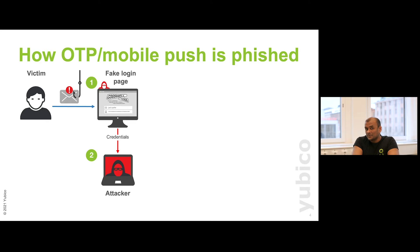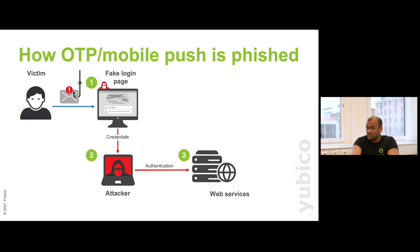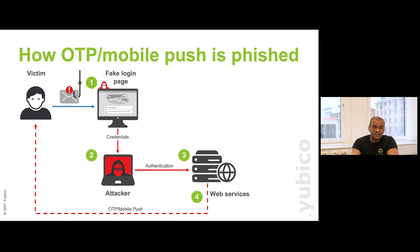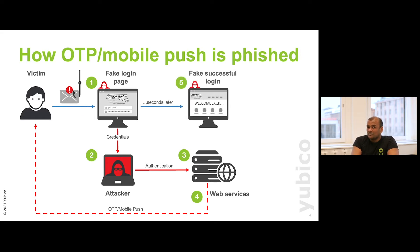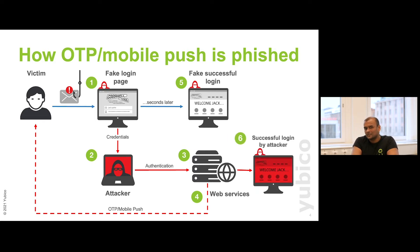As soon as you start putting in your username and password, the attacker intercepts it and simultaneously starts a login flow on the real website. The real website, having traditional multi-factor authentication in place, starts the MFA flow and you get a mobile push, OTP, or SMS. Thinking you're on the real site, you act on that. The attacker can then send you to a fake login page making you think you succeeded, or simply tell you the login failed. Meanwhile, the attacker gains access to the real system and can change whatever they need on your account. This is quite a big problem.